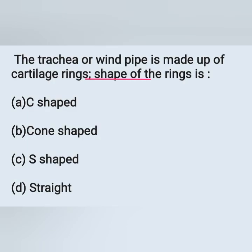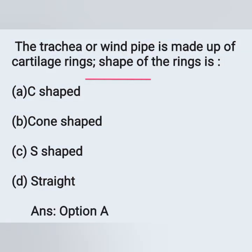Next question: the trachea or windpipe is made up of cartilage rings. What is the shape of the ring? Options: A) C shaped, B) corn shaped, C) A shaped, D) straight. The trachea is made up of C-shaped cartilage rings. Option A is the correct answer.